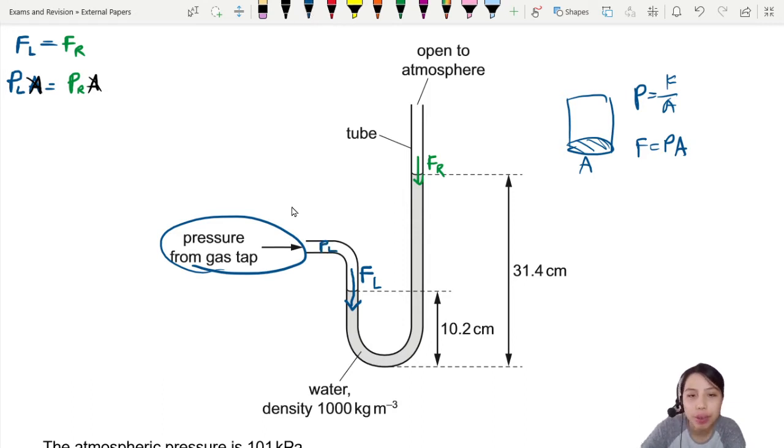So we can conclude whatever pressure is on this side, let me label this P on the left side. Whatever pressure is on this side of the tube must be the same as the pressure on the right side of the tube.